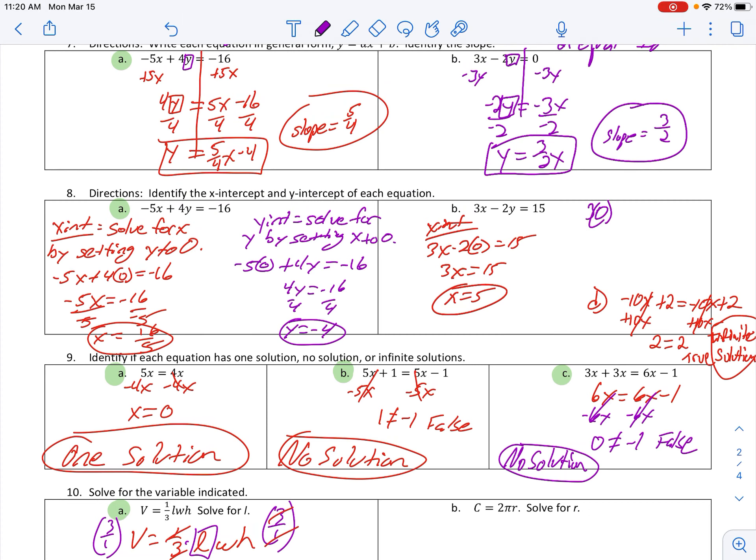For the Y intercept, I'm going to set X to 0 to find the Y intercept. And then it's just going to be a quick divide by negative 2. Negative 15 over 2 or negative 7.5 is fine as well.